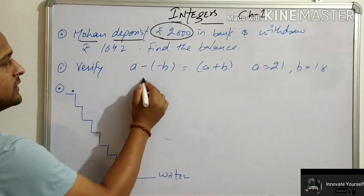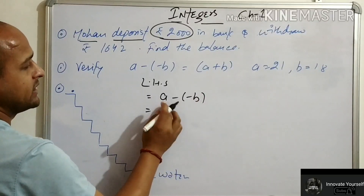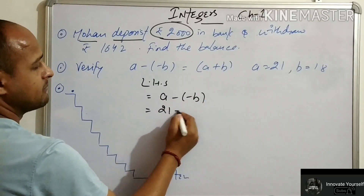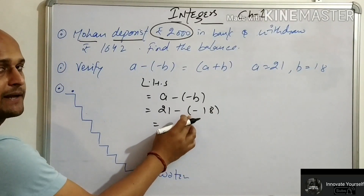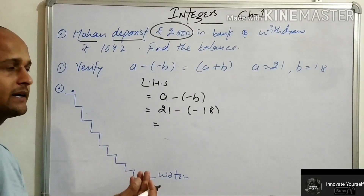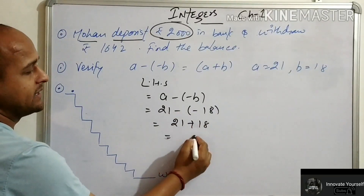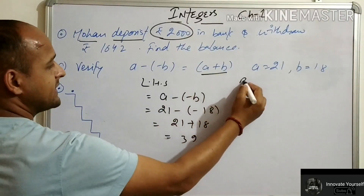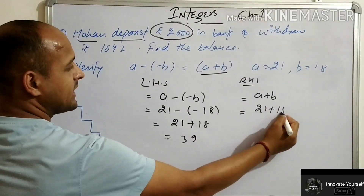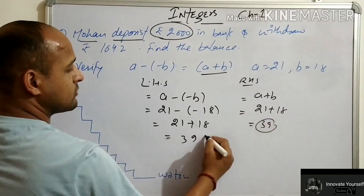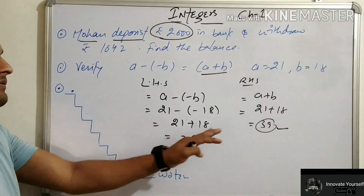Next question: verify means left hand side equals right hand side. Left hand side is a − (−b), where a = 21 and b = 18. Brackets mean multiply — in multiplication, same sign gives plus. So minus times minus is plus, giving 21 + 18 = 39. Right hand side is a + b = 21 + 18 = 39. Both sides are equal, so it is verified.